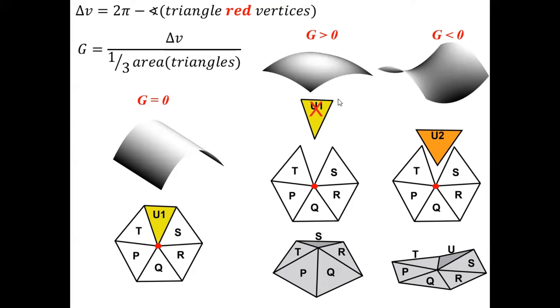But when we replace this triangle by one that has a wider angle, then we obtain the negative curvature case. How is the Gaussian curvature computed here?